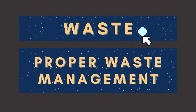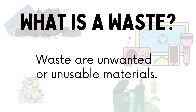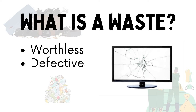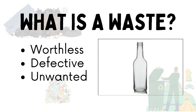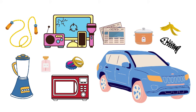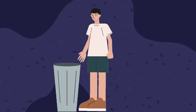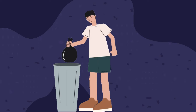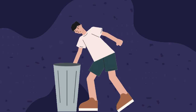Let's start with waste. Waste is defined as unwanted or unusable materials. Any material that is already classified as worthless or of no use — like a food wrapper, defective, or unwanted — is classified as waste. Waste varies in size; it can be as small as bottle caps or as big as a car. Waste is what we put inside our trash bins or what the garbage collector collects. But is that the end of it? No.